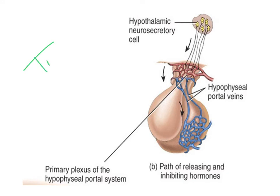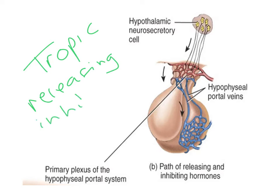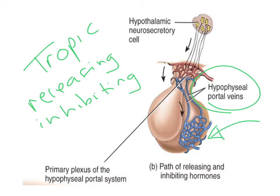The hypothalamus releases tropic hormones — hormones that target another endocrine gland. These hormones can either increase the release of a hormone from the anterior pituitary, in which case they are releasing hormones, or they can decrease the release, making them inhibiting hormones. As we saw with human growth hormone, there are both releasing and inhibiting hormones from the hypothalamus. The tropic hormone travels via the hypophyseal portal veins to the anterior pituitary, affecting glandular secretion from the adeno-hypophysis.